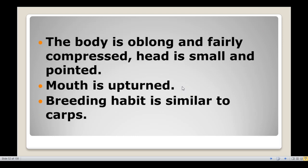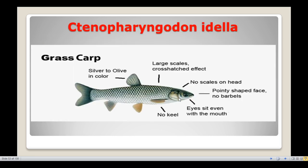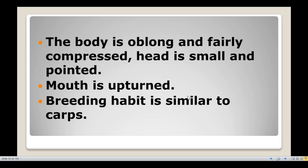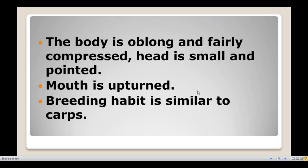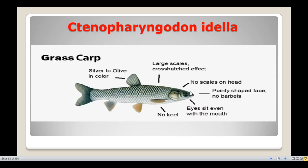The body of Grass Carp is oblong and fairly compressed, and the head is small and pointed. The mouth is upturned, making it a surface feeder, similar to other carps.